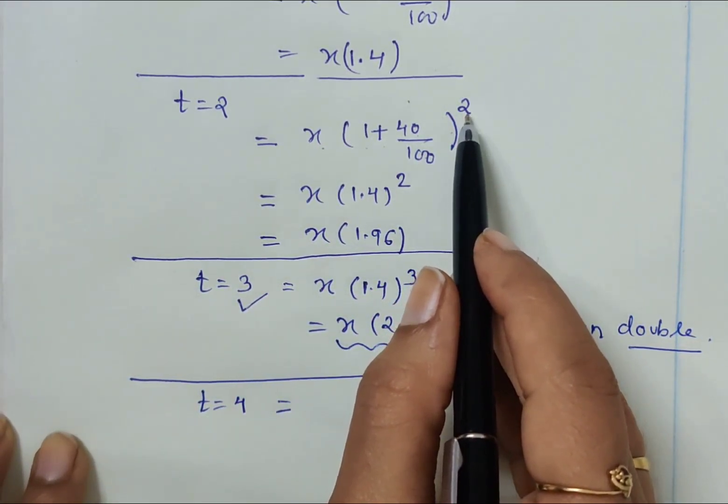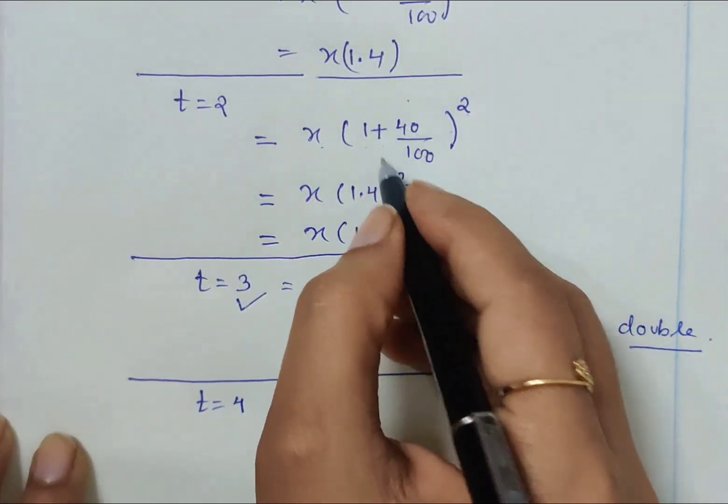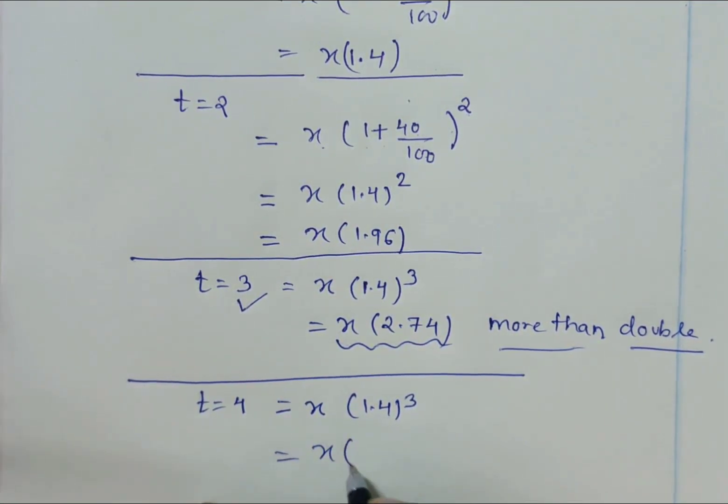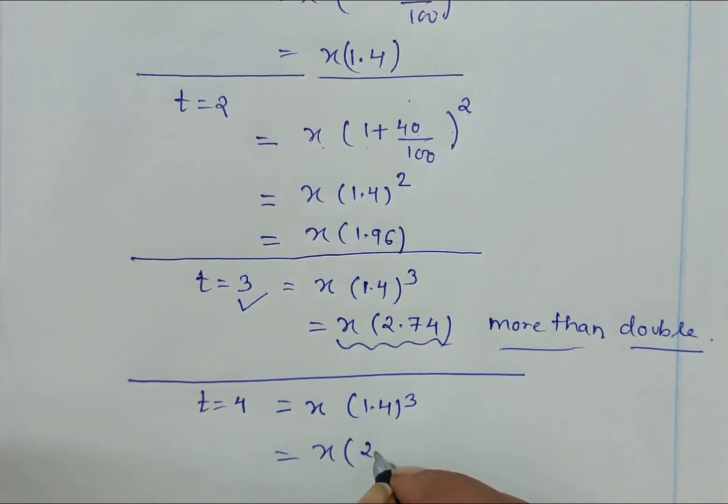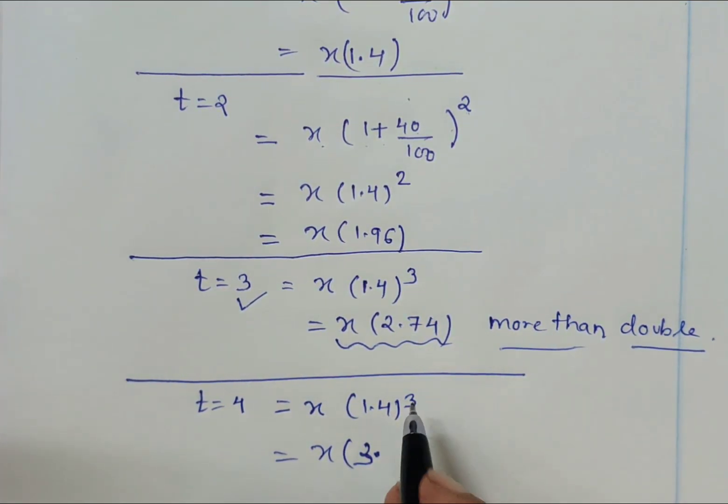For t = 4, we calculate again using the formula: P times (1 + R/100)^t. T is 4, so inside bracket the value is the same: x times 1.4 to the power 4. The cube of 1.4 is 2.74... sorry, 1.4 to the power 4 is 3.84.